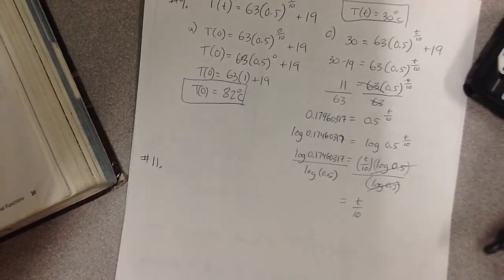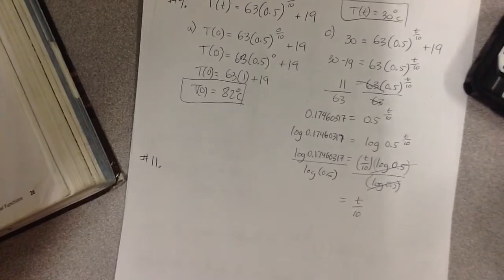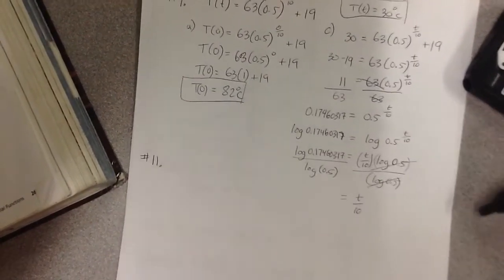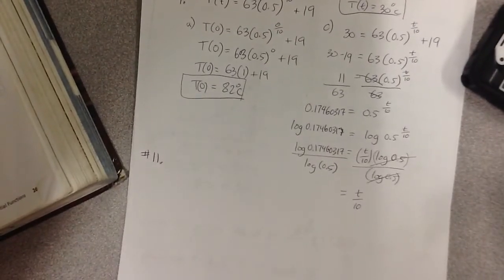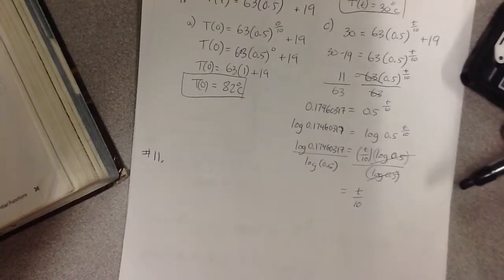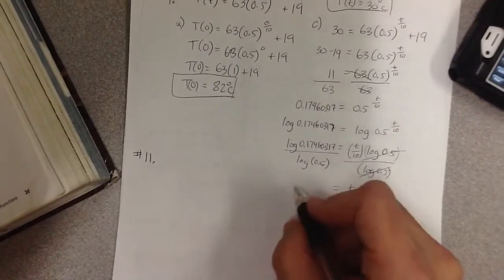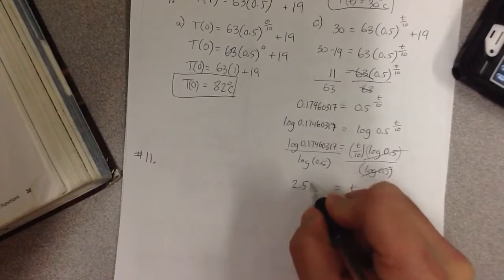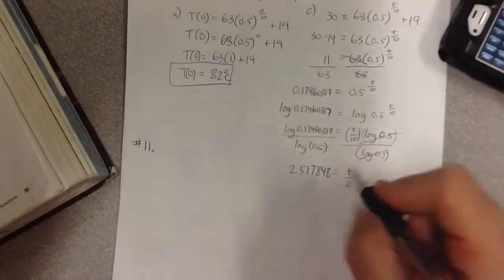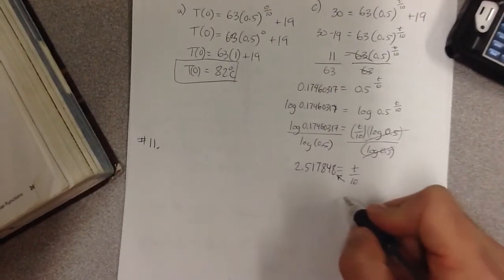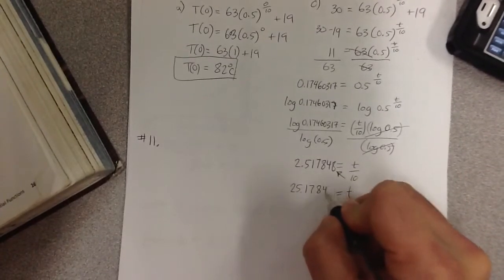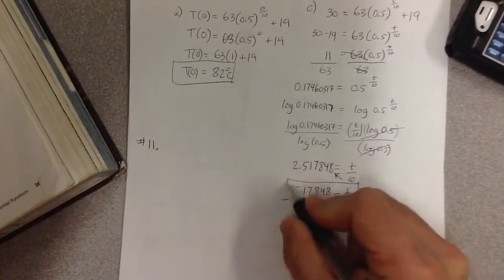So 0.17460317. If I take the log of that and divide it by the log of 0.5, I should get somewhere around 2.517848. And then now all I have to do is cross multiply the 10 and I will get t equals 25.17848. So that's what the time is equal to.